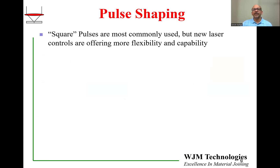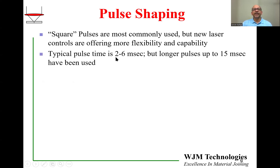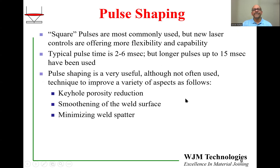In summary, the most common pulse shape is the square pulse, which was the only option on older lasers from the 1990s, and its use today is somewhat a remnant from those times. But now we have modern lasers with much more capability for programming, and you should use those features to solve welding issues in pulsed welding. Typical pulse time is on the order of two to six milliseconds, though longer pulses are possible. Pulse shaping is a very useful feature — although unfortunately not often used — that can reduce keyhole porosity, smoothen the weld surface, and minimize weld spatter.